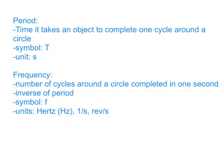Related to period is frequency — the number of cycles around a circle completed in one second. It can be number of rotations or revolutions; just how many times something goes around a circular path in one second. Frequency is the inverse of period. The symbol for frequency is a lowercase f, and the units are hertz — also written as one over seconds or revolutions per second.